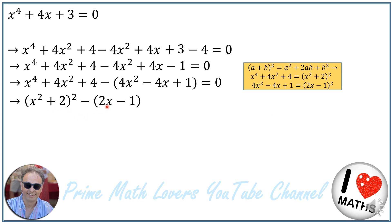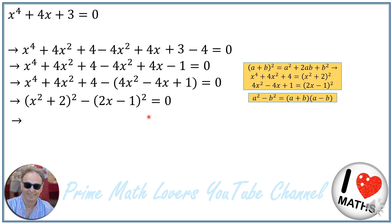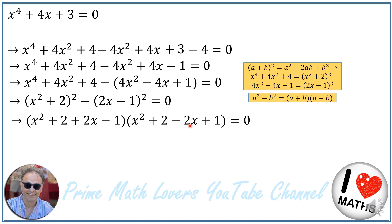Minus (2x minus 1) to the power of 2 is equal to 0. Utilizing the difference of squares identity, a squared minus b squared is equal to (a plus b) times (a minus b), where x squared plus 2 is a and 2x minus 1 is b. So I can write (x squared plus 2 plus 2x minus 1) times (x squared plus 2 minus 2x plus 1) is equal to 0.